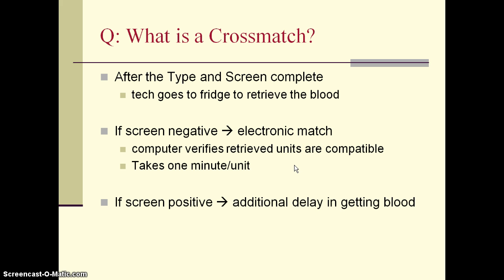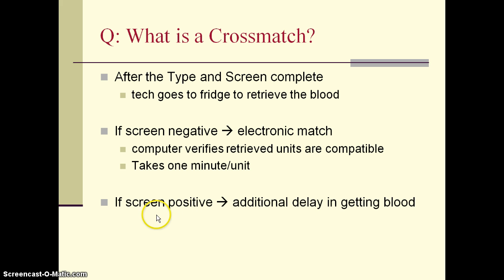A patient is not eligible for the computer-assisted electronic cross match if the antibody screen detects a non-ABO red cell antibody, such as an anti-D. In that case, we cannot go directly to the fridge and pull units. We must take a step back, work out why the antibody screen is positive, identify the culprit antibody or antibodies in the plasma, and then determine what blood products to give to ensure compatibility.